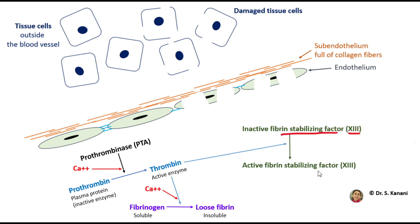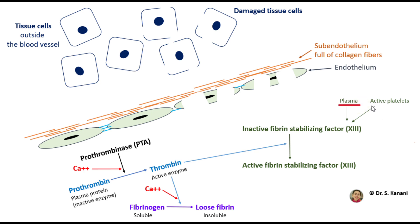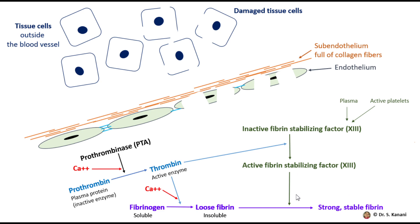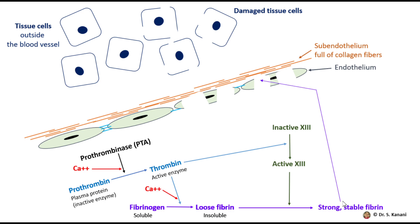We get fibrin stabilizing factor (factor 13) from two sources: some is found in blood plasma, and some comes from active platelets. Most plasma proteins are built by liver cells. When thrombin activates this factor, the active fibrin stabilizing factor converts those loose and weak fibrin molecules into strong and stable fibrin.